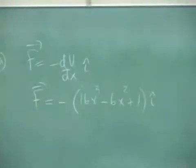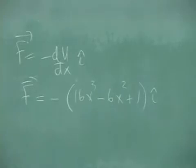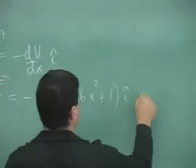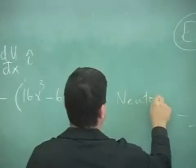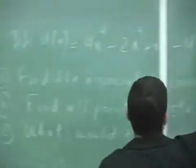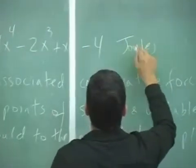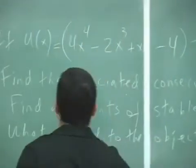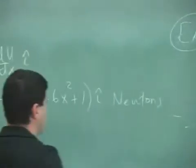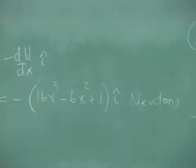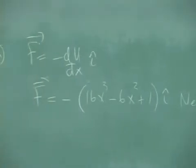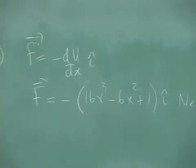And then just the negative, right? And that's it. So that's Newtons. The units here is Newtons. The units there would be Joules. Okay, now that's part A.